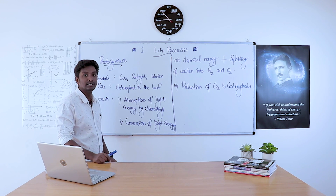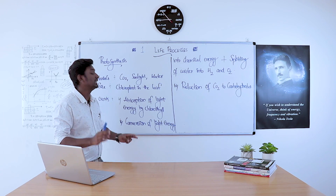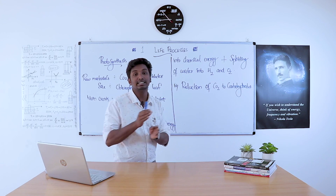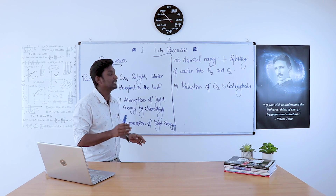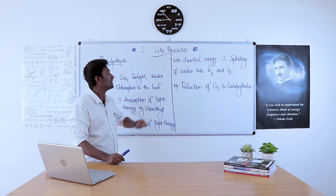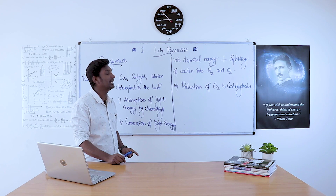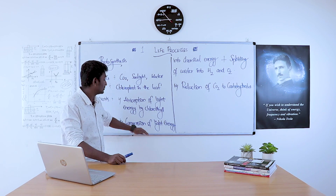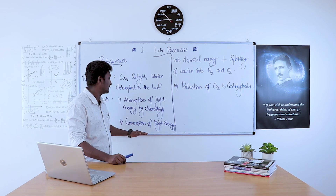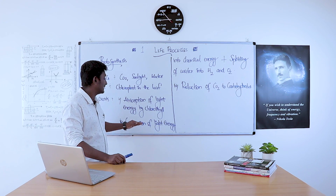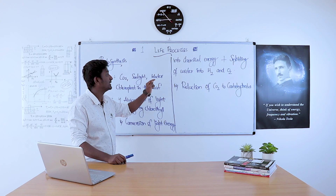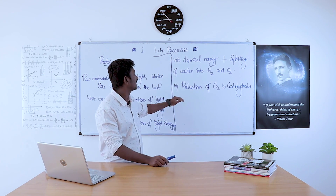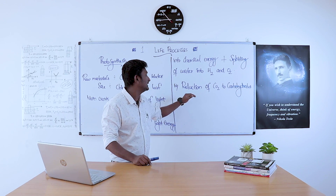The second step involves two things happening simultaneously: conversion of light energy into chemical energy, and splitting of water into hydrogen and oxygen. Light energy is converted to chemical energy, and at the same time, the water molecule is split into hydrogen and oxygen.